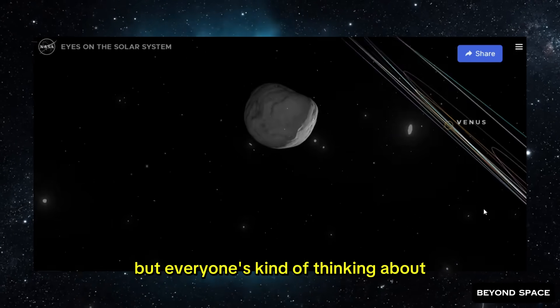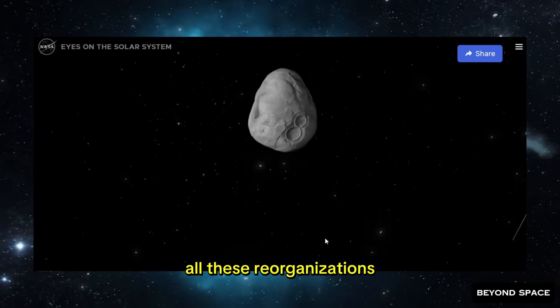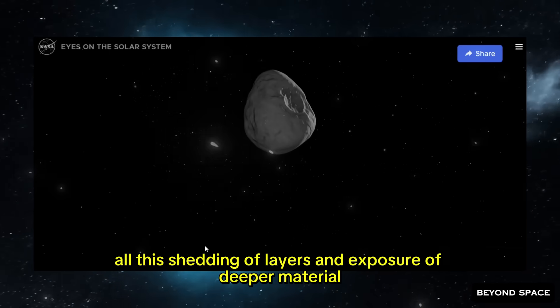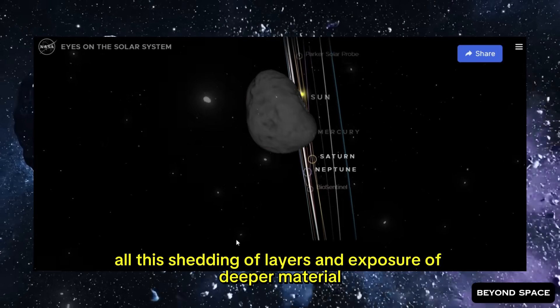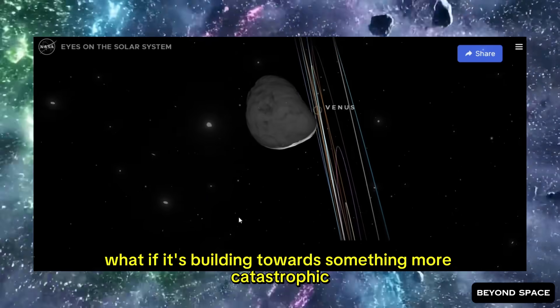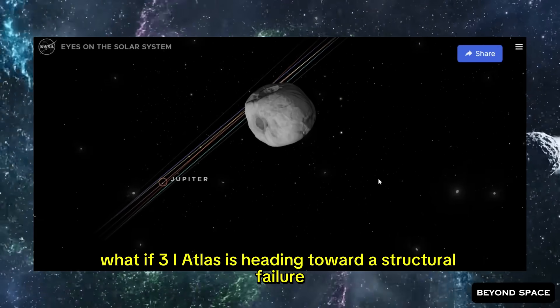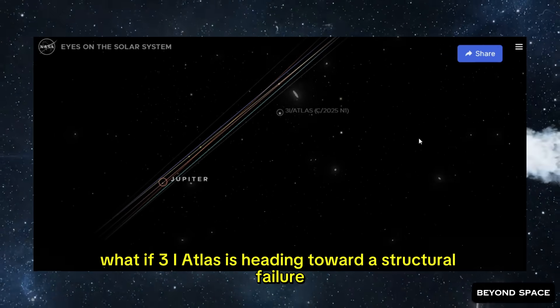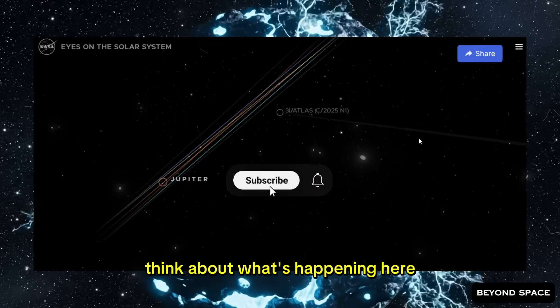And here's the possibility that nobody really wants to say out loud. But everyone's kind of thinking about, what if all these changes, all these reorganizations, all this shedding of layers and exposure of deeper material, what if it's building towards something more catastrophic? What if 3i Atlas is heading toward a structural failure?